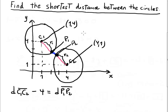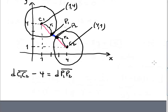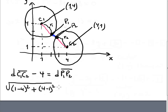Now it's pretty easy, because the distance between the centers is square root of (1 minus 4) squared plus (4 minus 1) squared. That's square root of 9 plus 9, which is square root of 18, which equals 3 radical 2.